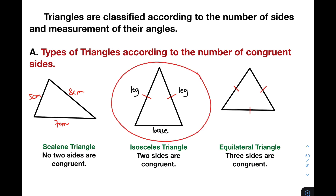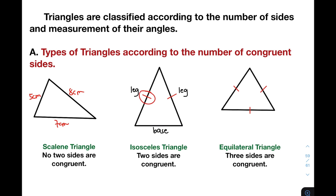Let's move on with the next type of triangle. Isosceles triangle — two sides are congruent. So, given these markings, it indicates that the sides are congruent. If pare sila ng markings or marking, ibig sabihin yung sides are congruent. And since this one is an isosceles triangle, meron siyang specific parts. Itong kanyang congruent sides, itong equal sides niya, ay tinatawag nating legs. While the side with the different measurement, this is your base. Tandaan po yan.